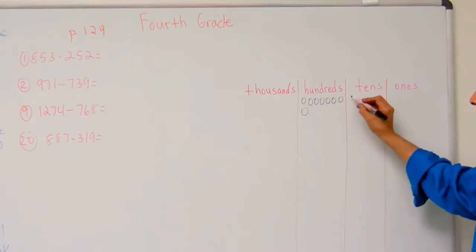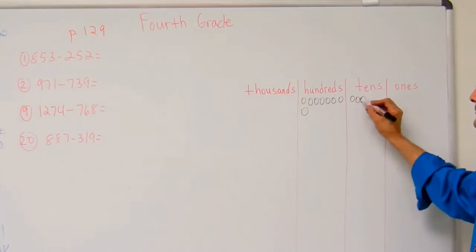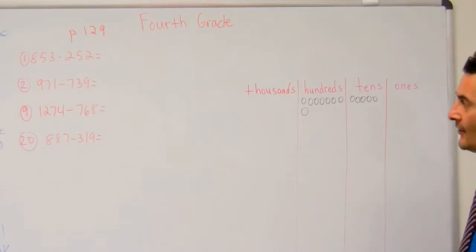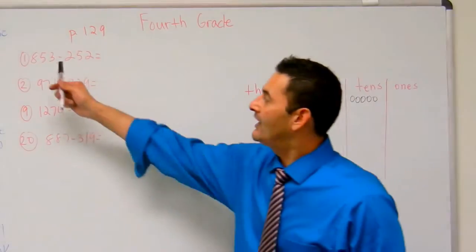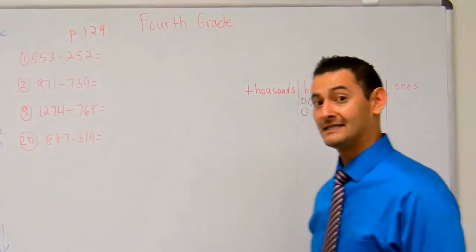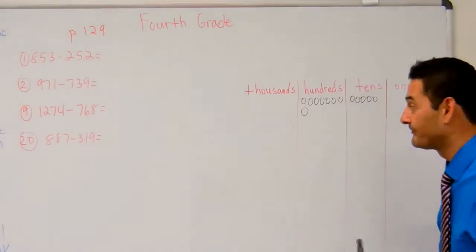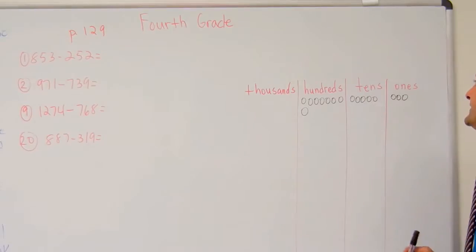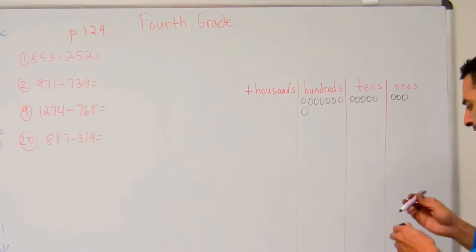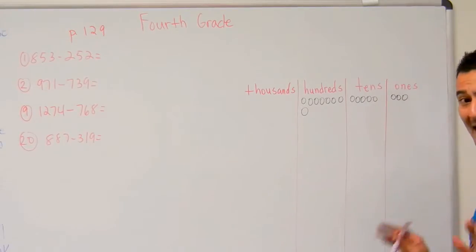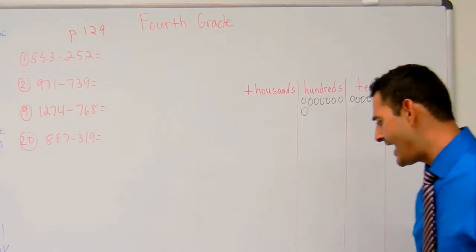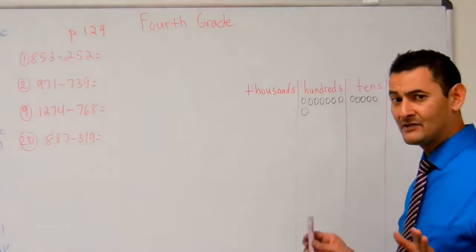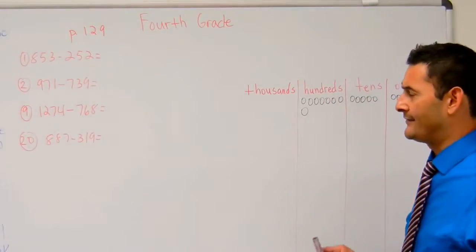I'm going to go to my tens column — one, two, three, four, five. Now how many do I have in the ones place? I've got three, so I'm going to do three ones. Now because I'm not adding, I'm not going to add anymore. Now what I'm going to do is just take away.